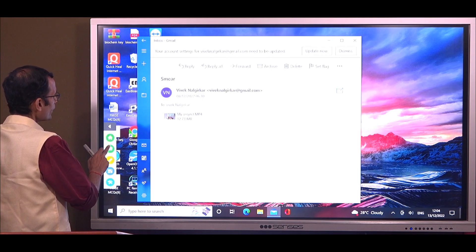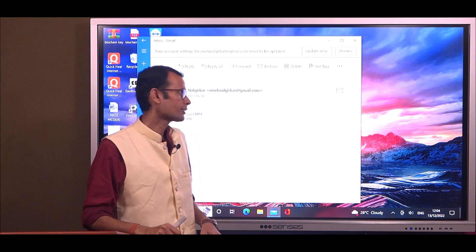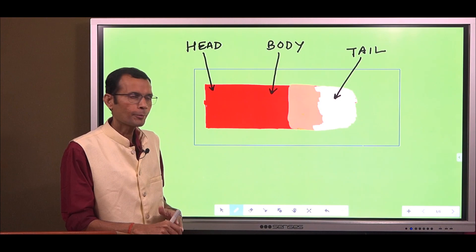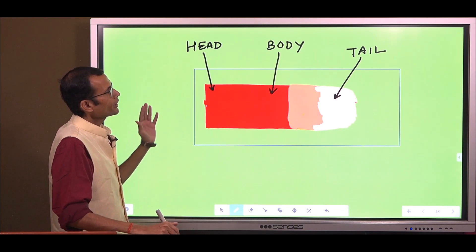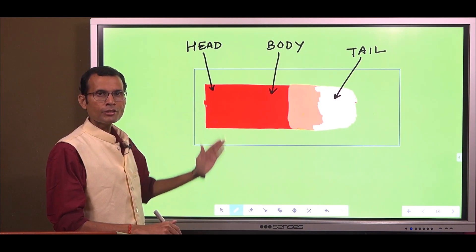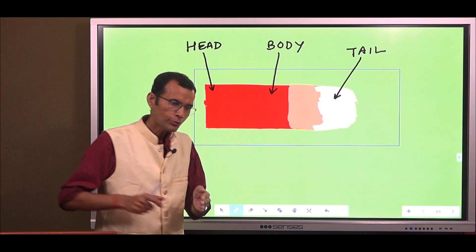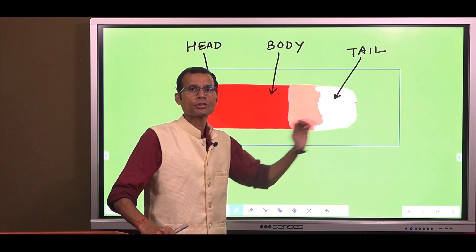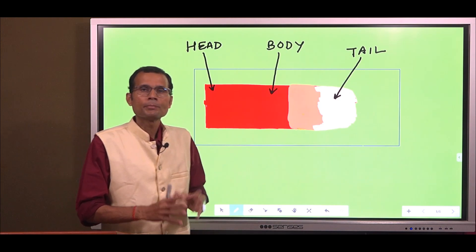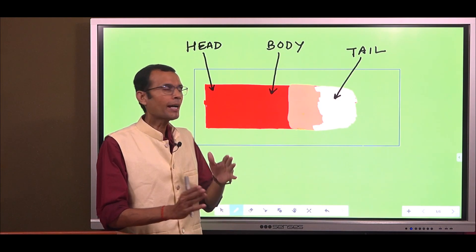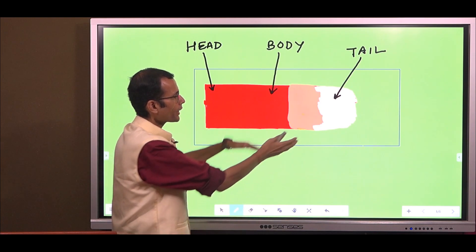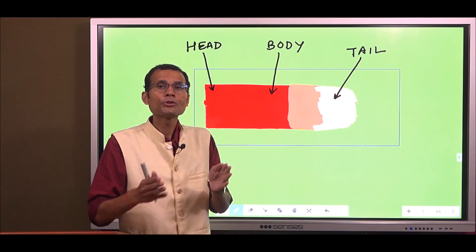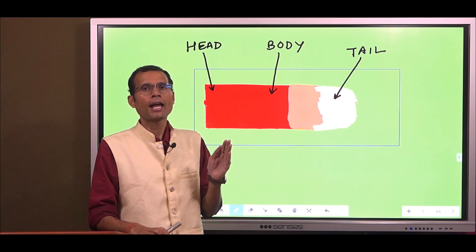Let's see which cells are likely to be found in which regions of a smear. This is a diagrammatic representation of a peripheral smear. It has three regions: the head region where the drop was taken and from where you spread that drop, then the body portion in the middle and the tail portion. So in the tail region and on the margins or edges of the slide, we would mainly find polymorphonuclear neutrophils and monocytes.